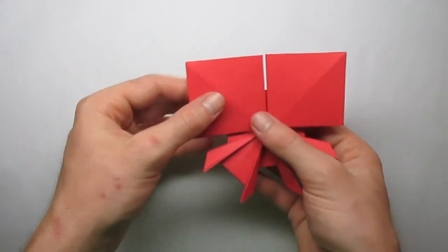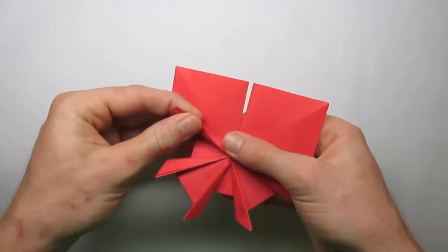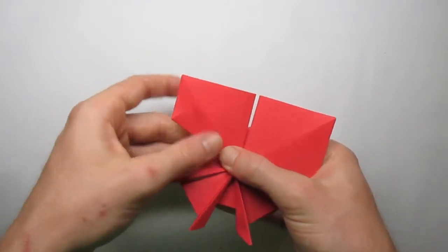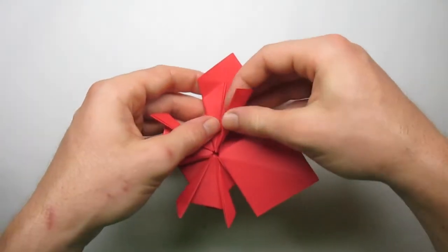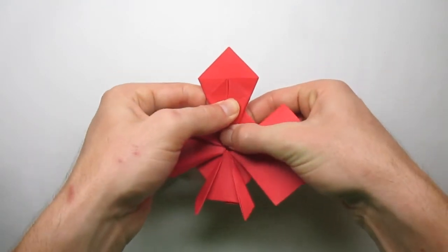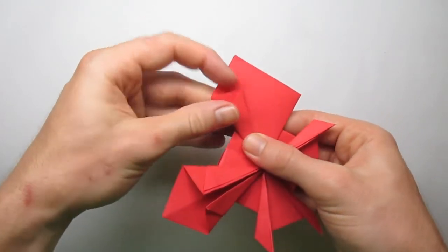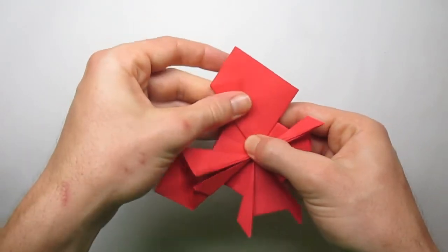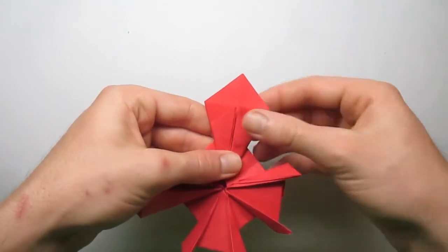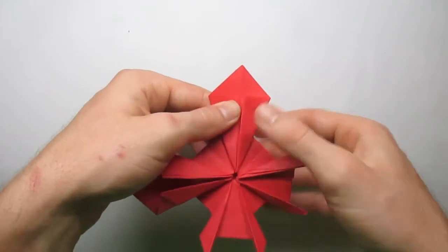So, now we're going to work on the claws. Take the center, take the sides here and fold it in to the center crease. Just like this. Do that on all four.